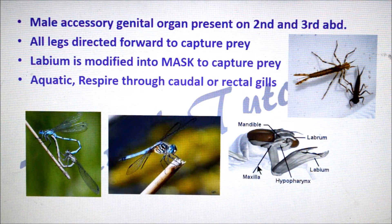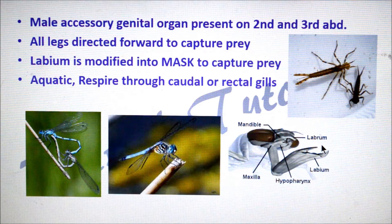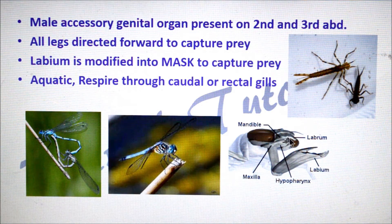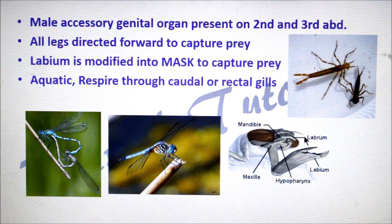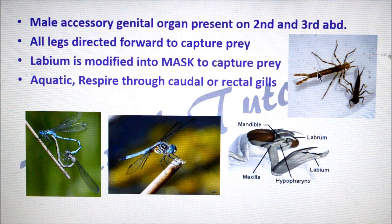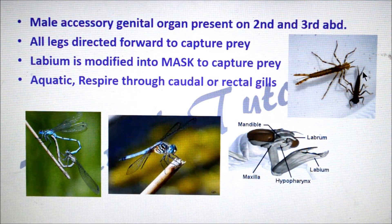That means whenever prey passes, the labium is protracted forward and then it captures the prey and drags it towards the mouth, so that this labium covers the face and looks like a mask. They mainly respire through caudal gills in damselflies, whereas through rectal gills in dragonflies.